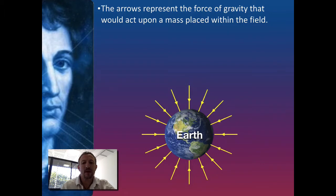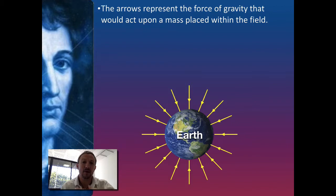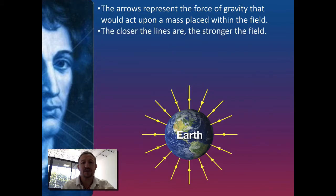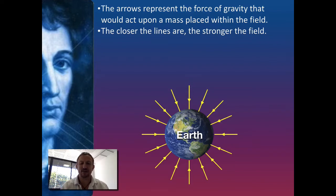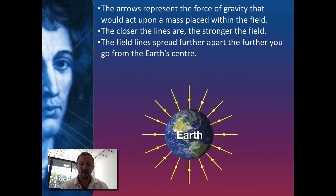What we've got here is a representation of the Earth where we've got our gravitational fields which are centred into the centre of the Earth. What we need to explore is what happens to a mass the further out we go from the Earth's surface. The closer the field lines are to the Earth, the stronger the gravitational field is going to be. The further you go out, the wider the field lines go, which means you get a decrease in that gravitational field.